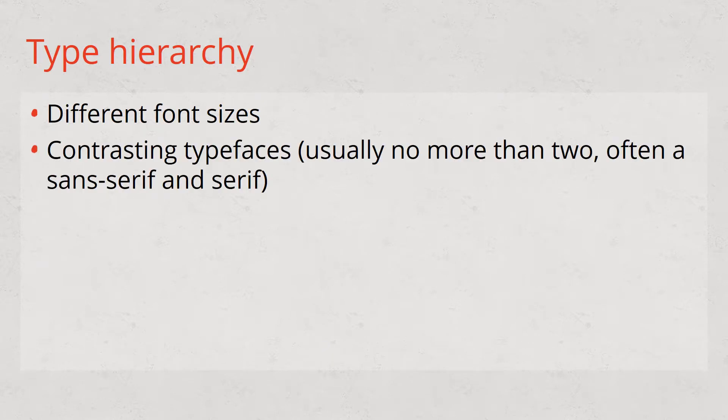So with this type hierarchy, how do you show the difference between level one, two, and three? First off, different font sizes are useful to show the difference between them. Contrasting typefaces as well — please don't use more than two typefaces on your page, because any more than that gets really messy and it's hard to know where to look. Often people traditionally use a sans-serif and a serif together, but you don't have to. You can use one typeface and just use different weights, sizes, and styles of that typeface to ensure they work together well.